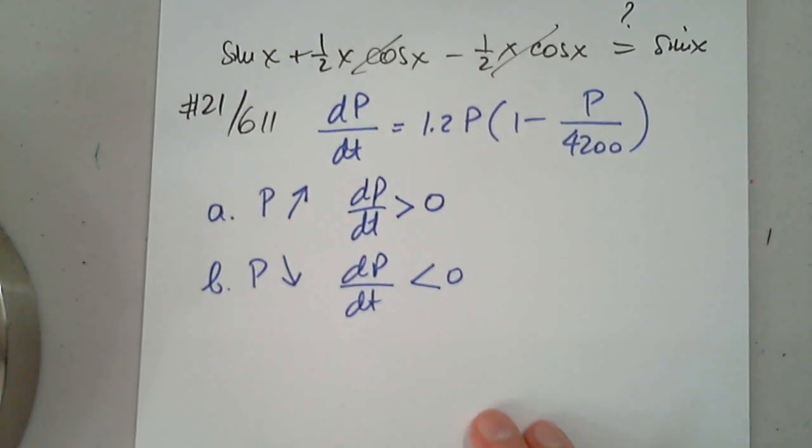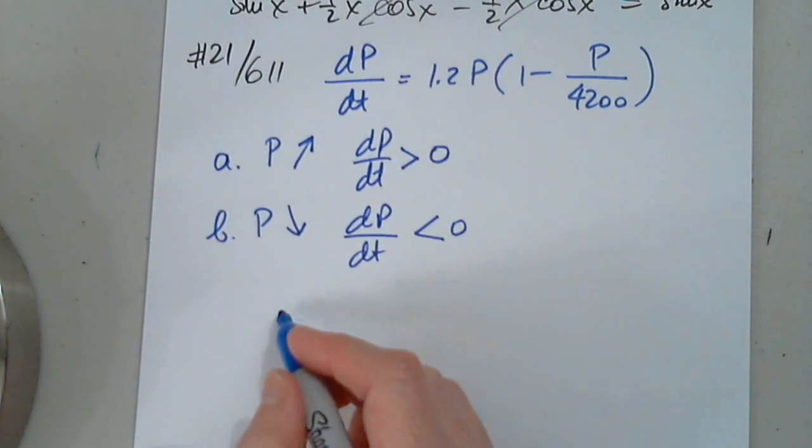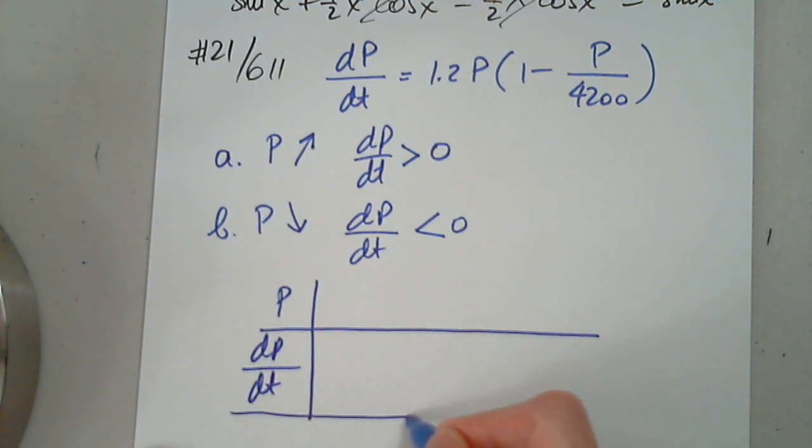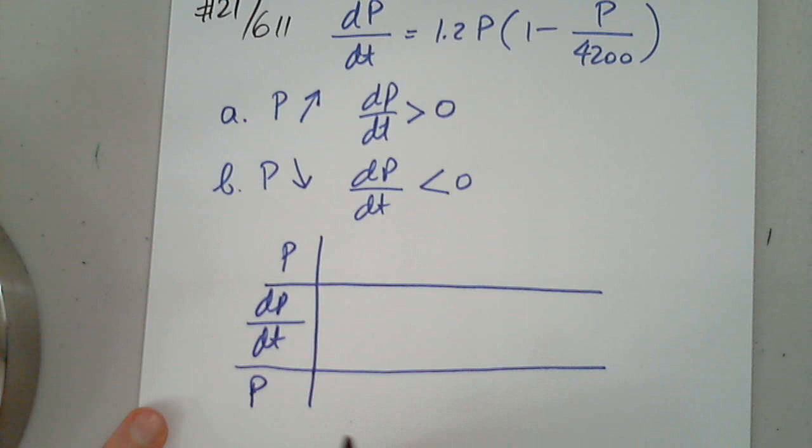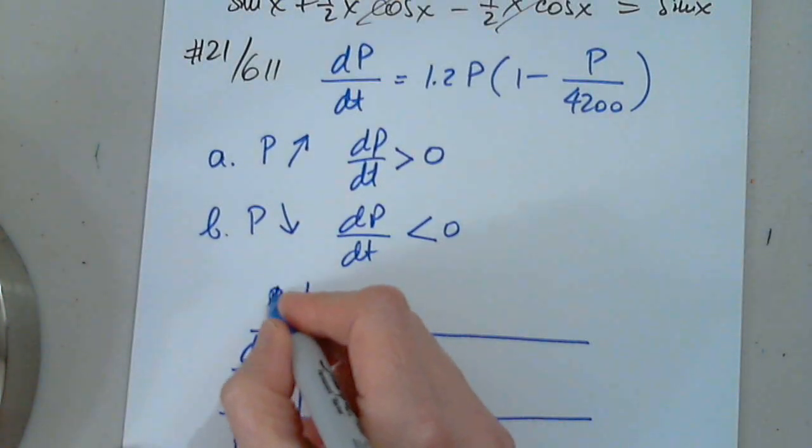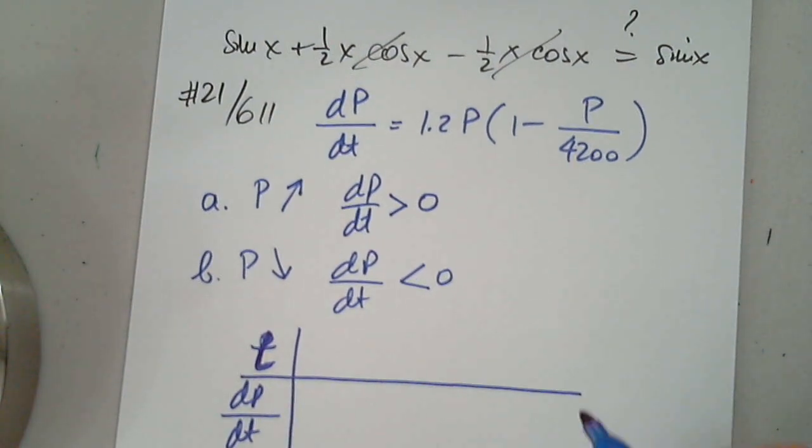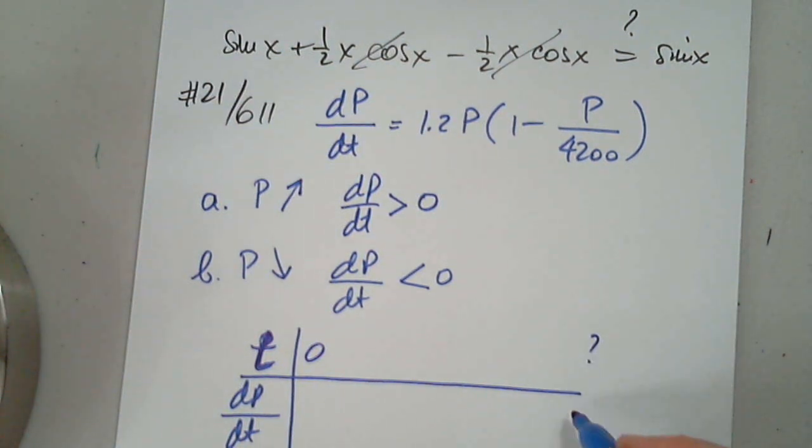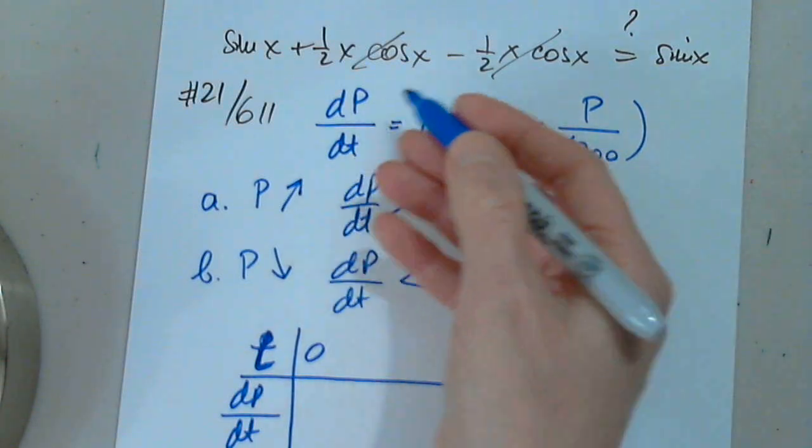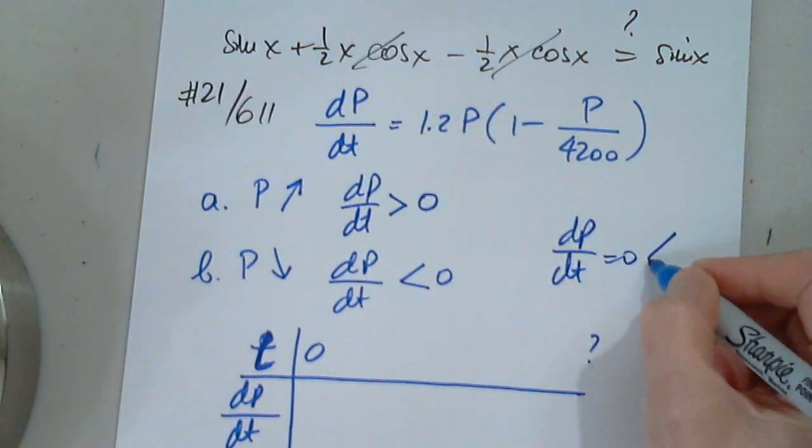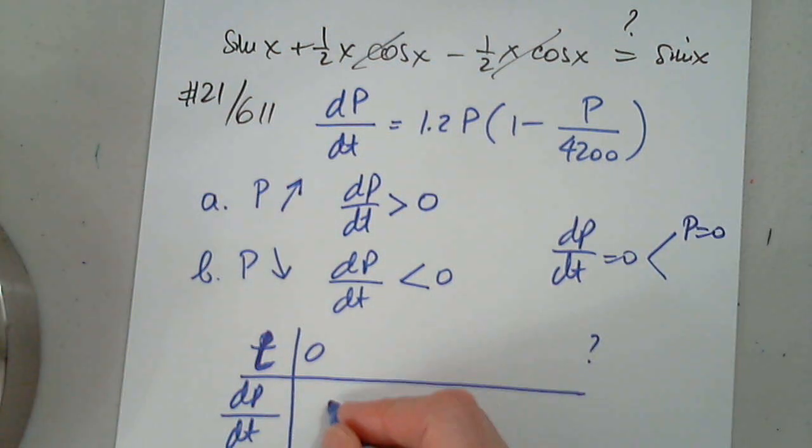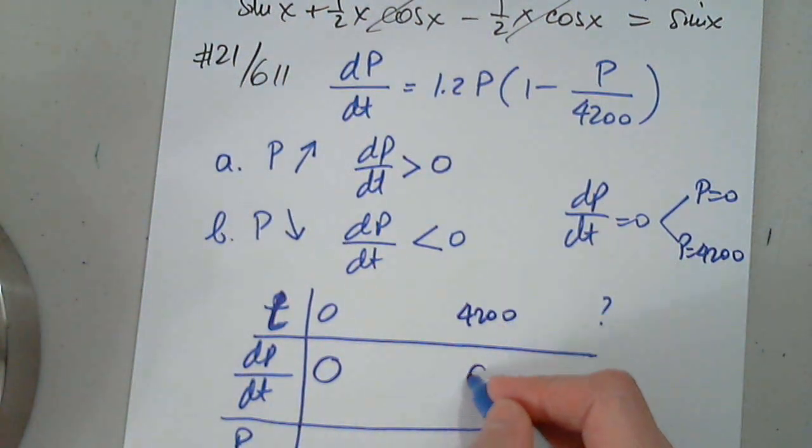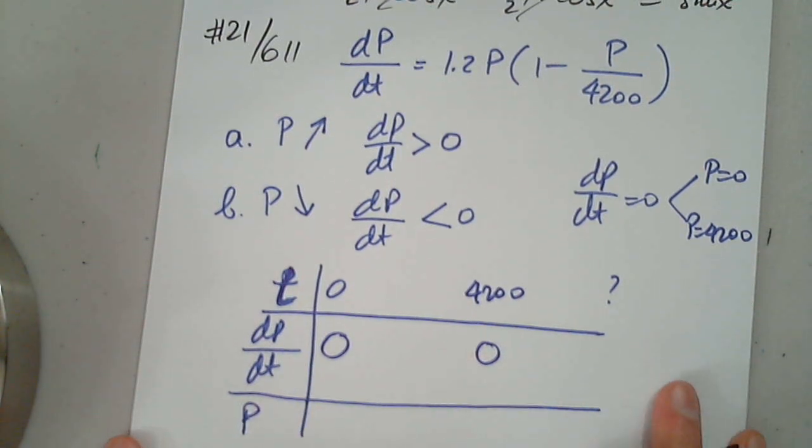But let's address parts A and B first. What I like to present is a table in which I have DP over DT. And sometimes, if it's necessary, also the function P. I didn't mean P here, but I meant T. T is a variable in the problem. So T is time, so it can be 0 to whatever. I don't know. We know that DP over DT, when I simply by inspection here, is 0 in a situation when P is 0. And when P is 4200.